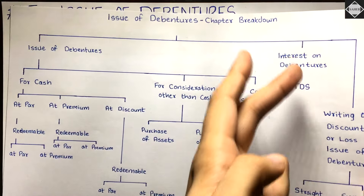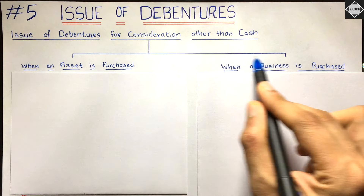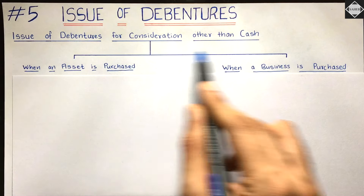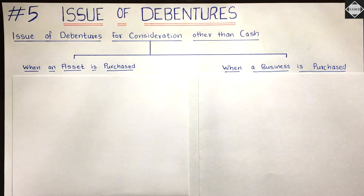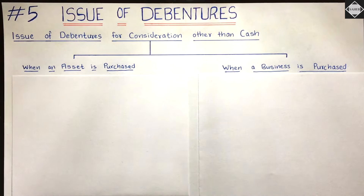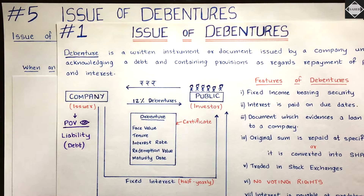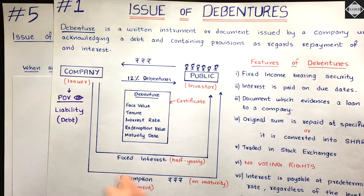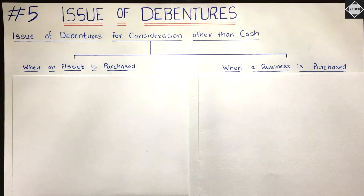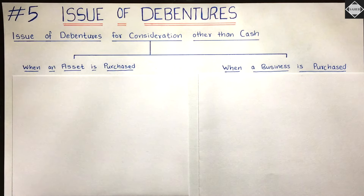In the next video we will solve problems from the CA Foundation study material, and then cover the remaining two topics. Now let's understand what 'issue of debentures for consideration other than cash' means. We all know a debenture is a long-term debt instrument — the company issues debentures to the public, raises finance, and repays on maturity after five, six, or seven years.